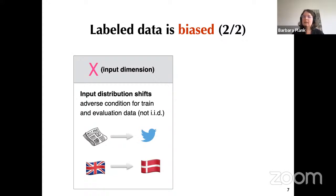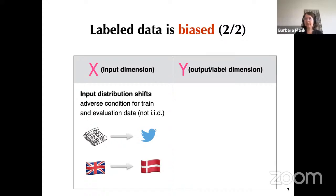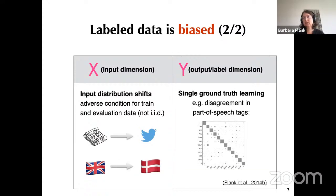I'd also like to point out a second issue related to data bias: the output or label dimension. In NLP, we typically aim at a single ground-truth label, aggregating annotations from annotators into one interpretation. But it has been shown that this is an idealization. I'll go into this in the third part of my talk, showing there is more value if we look at disagreements and embrace them in learning.